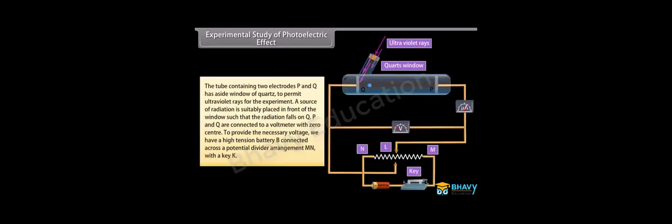The apparatus for the experimental study of the photoelectric effect consists of a tube with two electrodes P and Q, with a side window to permit ultraviolet rays. A radiation source is placed in front of the window so that radiation falls on Q. P and Q are connected to a voltmeter with a zero center. A high-tension battery B is connected across a potential divider arrangement MN with a key K to provide the necessary voltage. The number of photoelectrons emitted per second is directly proportional to the intensity of incident radiation.